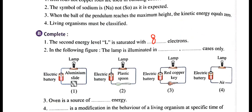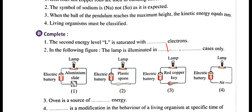In the following figure, the lamp is illuminated in which cases only. The aluminum slide is a good conductor, so it will illuminate. Plastic spoon is a bad conductor. Red copper key is a good conductor. Air is a bad conductor. So the lamp will illuminate in cases 1 and 3 — aluminum slide and copper key — because both are good conductors of electricity.